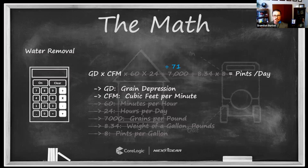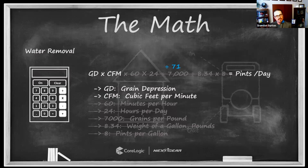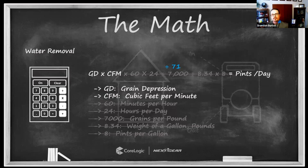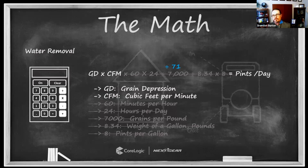To put that in plain terms: if I tell someone my dehumidifier is getting a 30 grain depression, that means nothing to most people. But if I say the dehumidifier is removing 112 pints of water per day, that makes a lot more sense — especially when explaining it in documentation or having a conversation with an adjuster or property manager. Grain depression times CFM, where CFM is the airflow rating from the manufacturer, divided by 71 gives you pints per day.